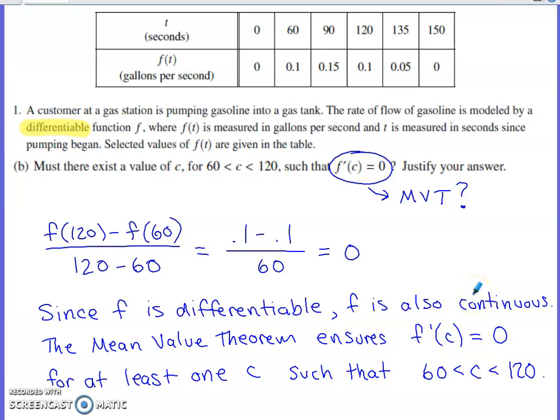That's a theorem that you've likely used off and on throughout your work in calculus. And therefore, the mean value theorem ensures that the derivative value is going to be equal to that average slope value for at least one c for a c between 60 and 120.